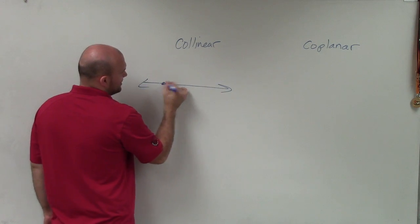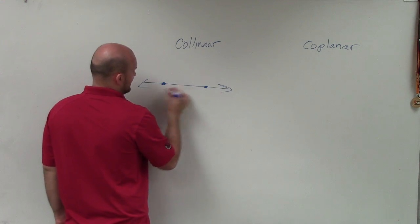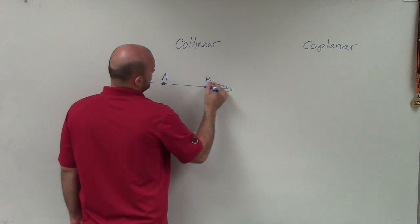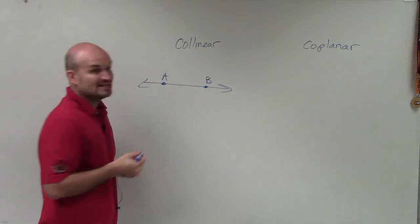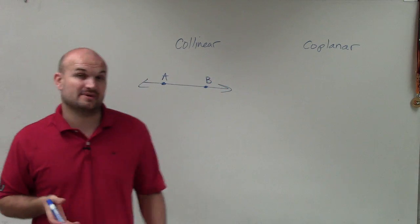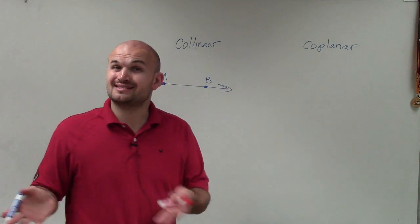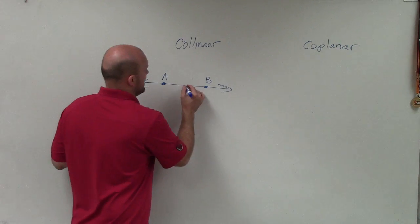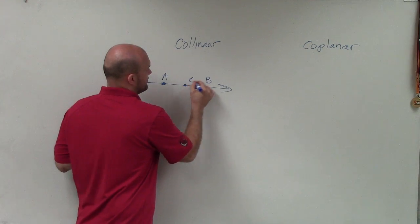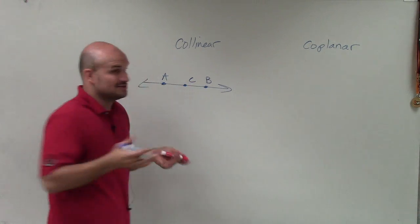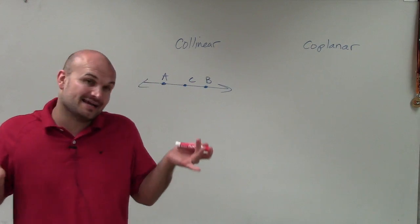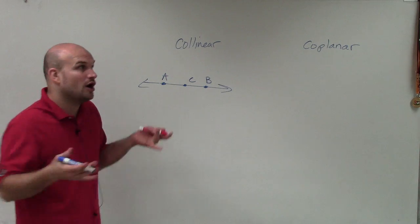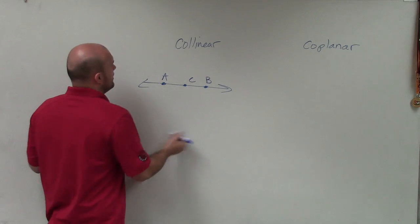So if I make up a line and let's call this point A, point B — we can say that points A and B are collinear because they lie on the same line. And if I give it a third point, since the third point is also on the line, points A, B, and C are all collinear.